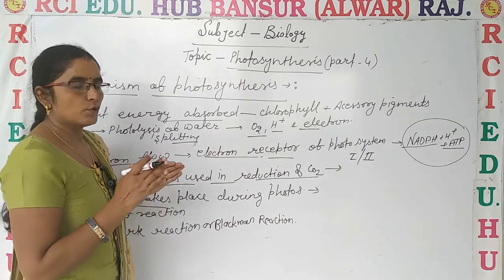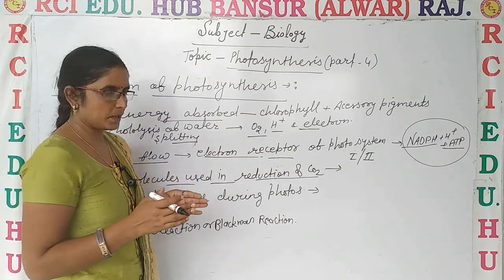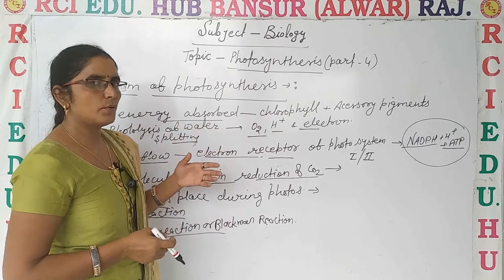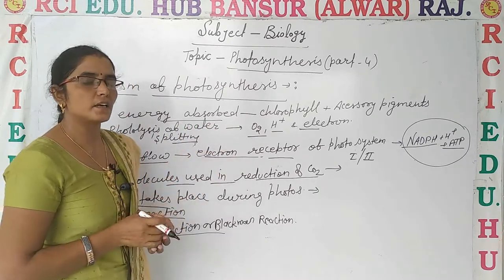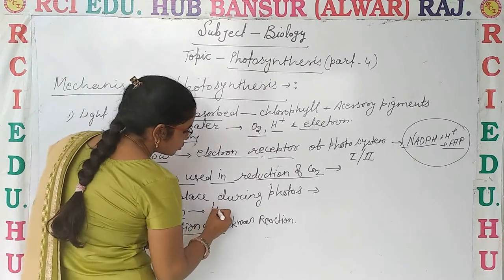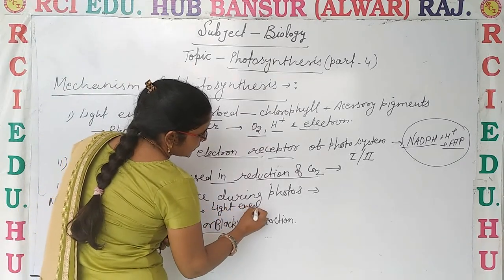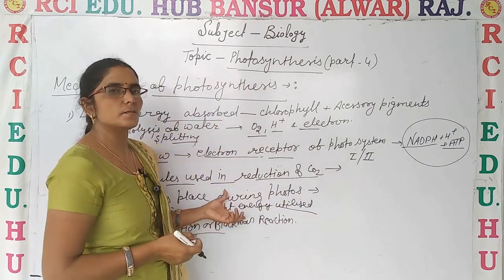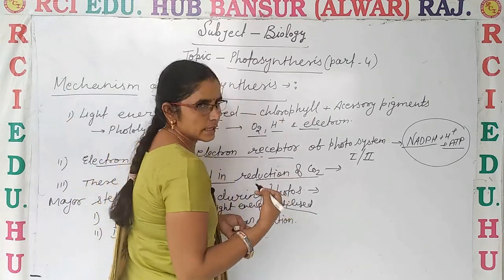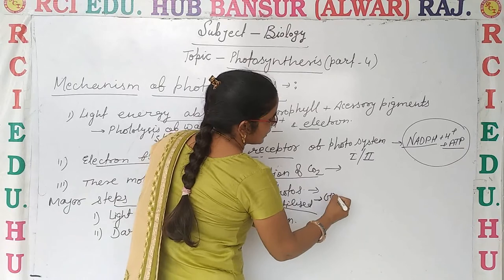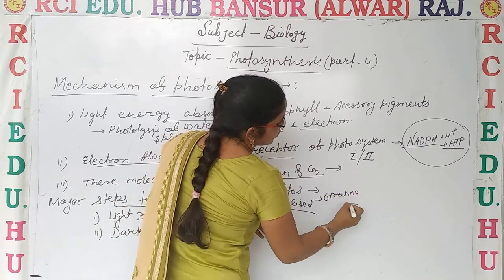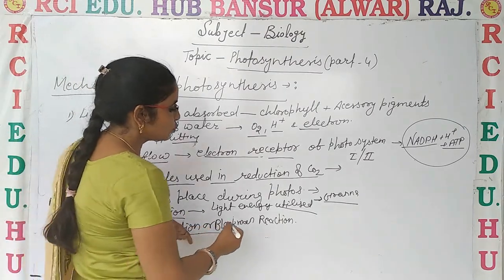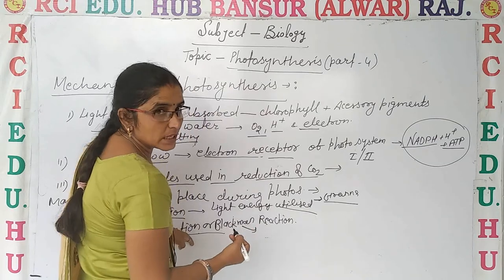In photosynthesis, there are mainly two steps: one is the light reaction and another is the dark reaction. In the light reaction, light energy is utilized — this reaction takes place in the presence of sunlight. It takes place in the granum region of the chloroplast, which we already discussed.